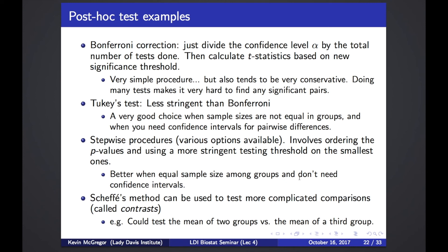The Bonferroni procedure is simple and not mathematically intensive, but it tends to be very conservative. In statistical genetics, for example, we might do hundreds of thousands or millions of comparisons — in that case Bonferroni is way too conservative, and dividing your threshold by 500,000 or a million means you'd never find a significant difference.